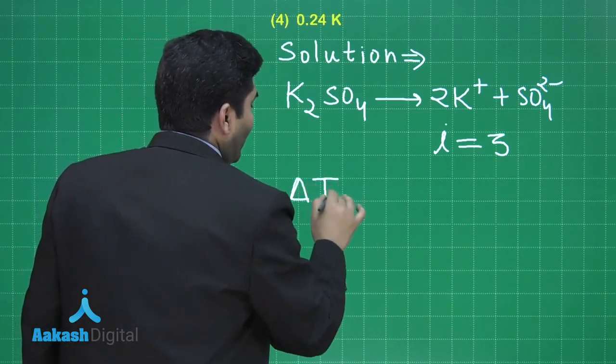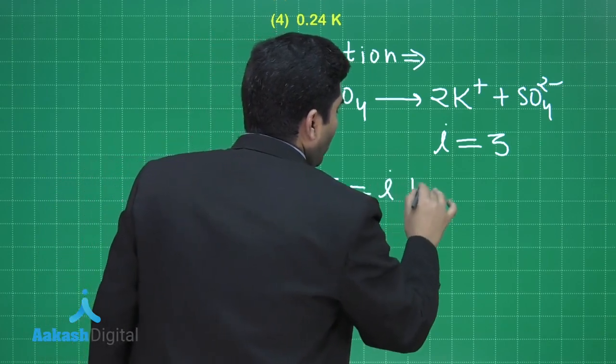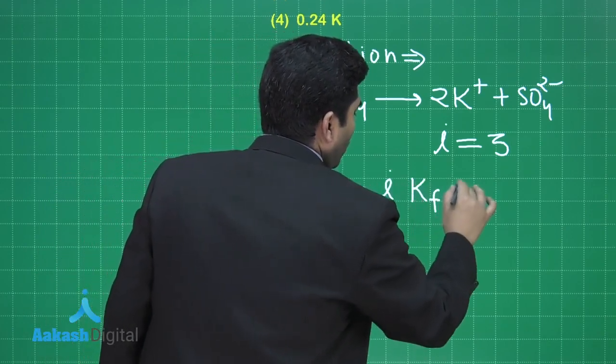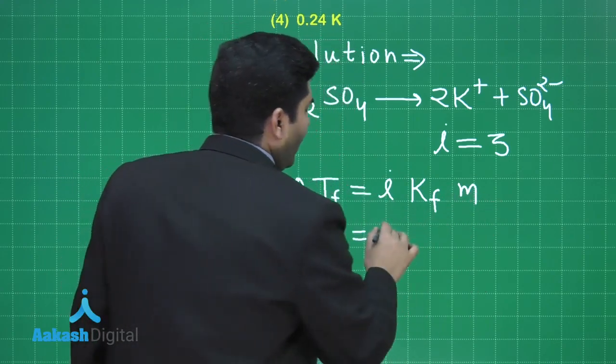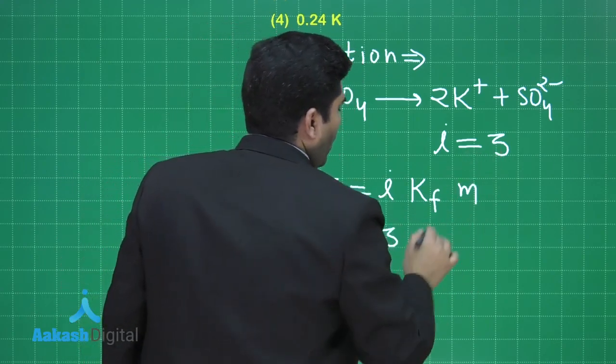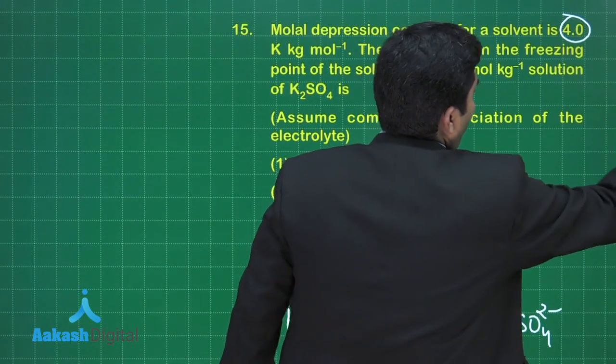If we talk about the depression in freezing point, delta Tf, it will be equal to i into Kf into M. And what is i? i is 3. And Kf is given in the question and that is equal to 4.